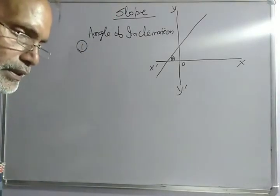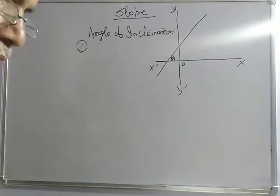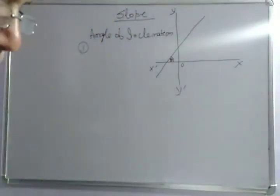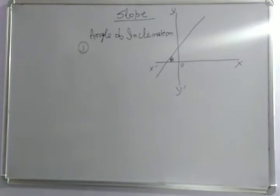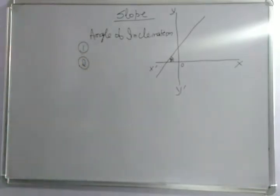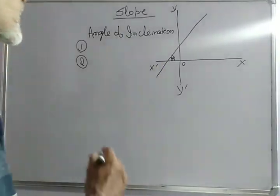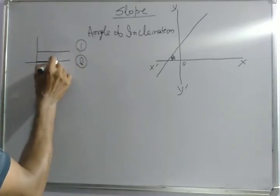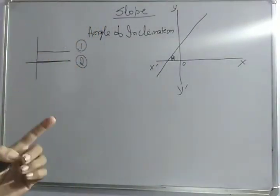Remember: number one — the angle of inclination is usually denoted by theta. The inclination theta of the line always lies between 0 to 180 degrees. The inclination of a horizontal line — meaning a line parallel to the x-axis or coinciding with the x-axis — is defined to be 0 or 180 degrees. So if the line is parallel to the x-axis or on the x-axis, the angle is always 0 or 180 degrees.